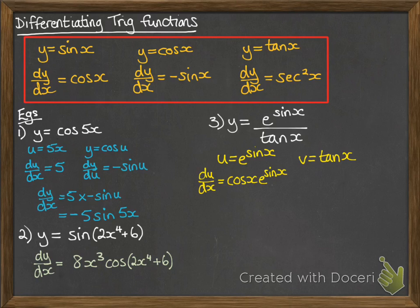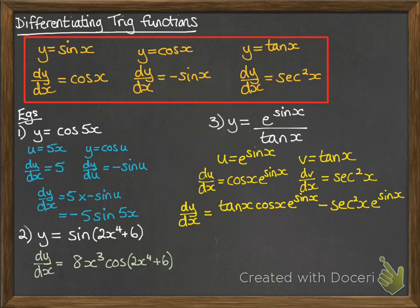So du by dx. You looked at how to differentiate e in the last video. So this is now differentiate the sin x that's in the exponent and multiply it by the original e part. So that's cos x e to the sin x. And if you differentiate tan x, you get sec squared x. So now dy by dx, using the quotient rule, is the following. So this is v du by dx minus u dv by dx, all over v squared.